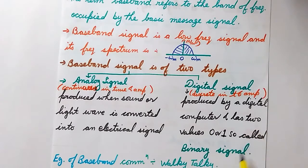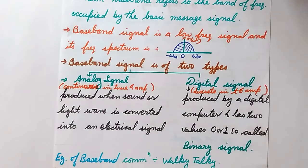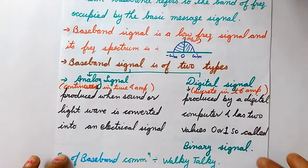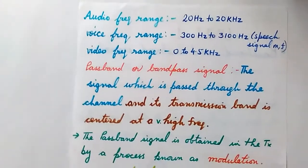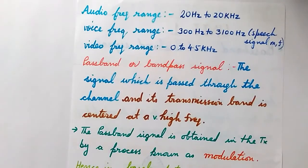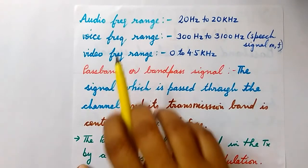The output produced by a digital computer comes under this category, and it produces two values — 0 or 1 — so it is called a binary signal. An example of baseband communication is that of a walkie-talkie. In baseband communication, the original message signal is directly transmitted over the channel. It is not for long distance communication; it is limited to very short distances.